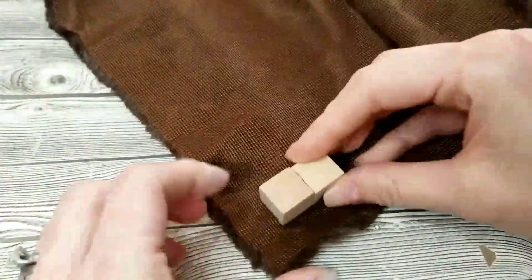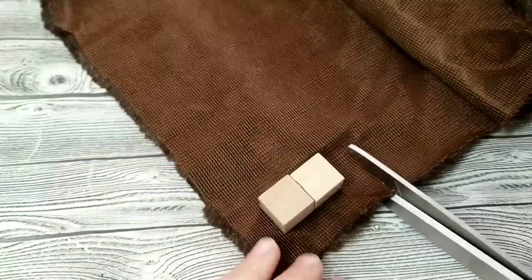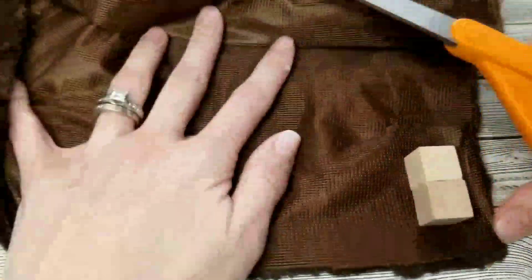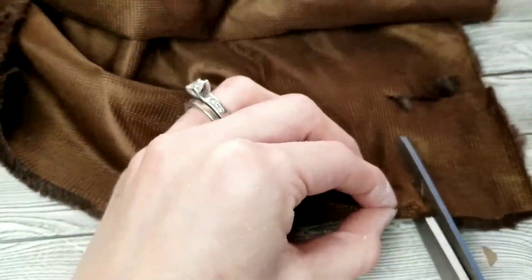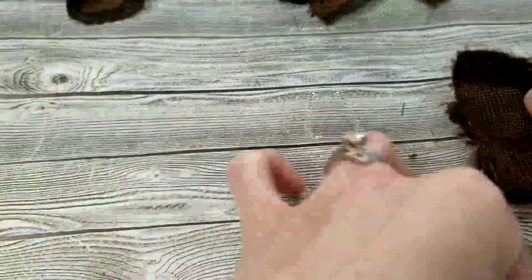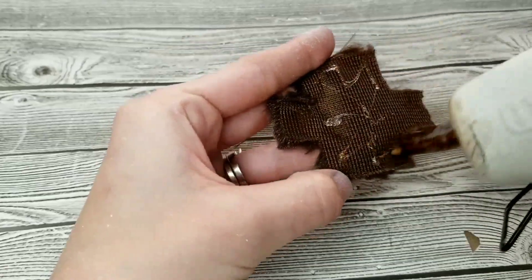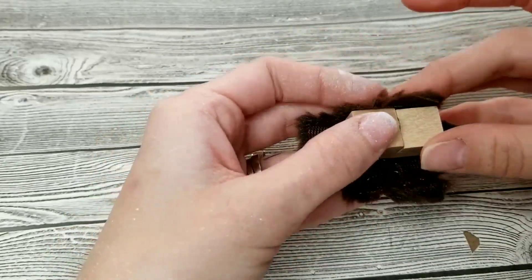I used some brown faux fur to cover my other set of two blocks. I cut this out in the same way as I did the gray fur, and I cut out those four corner shapes, and then I added some hot glue and glued it in place.